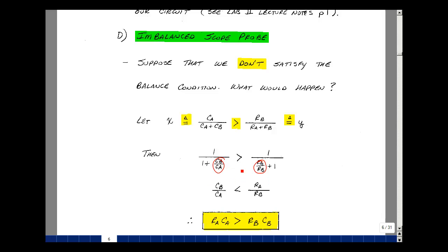But because we're taking the reciprocal, we're going to flip the sign of the inequality around. So that means that c sub a divided into c sub b is actually less than r sub a divided by r sub b. And by cross-multiplying, we then get that r sub a times c sub a is greater than r sub b times c sub b.